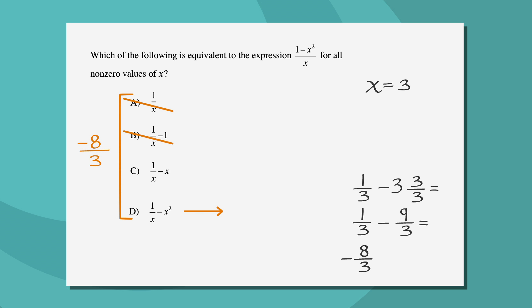We aren't done yet. We still need to test choice D, just in case. If we plug into answer choice D, we get 1 third minus 9, or negative 26 over 3. Cross that one out.